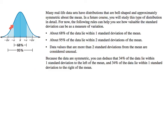This is something called a bell-shaped curve. For example, if you're a teacher, it's expected that most of your students would be in the average range academically — you'll have some that are low, some that are higher, but most are in the average range. That's what a bell-shaped curve talks about: most of the data is in the center. Many real-life data sets have distributions that are bell-shaped and approximately symmetric about the mean.